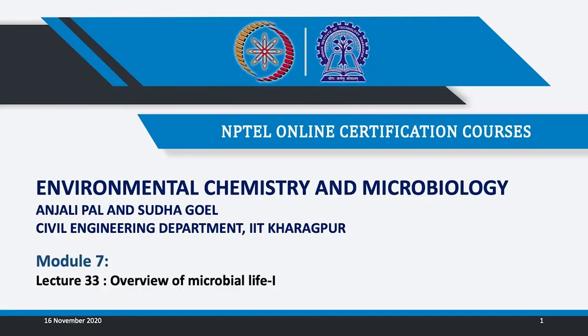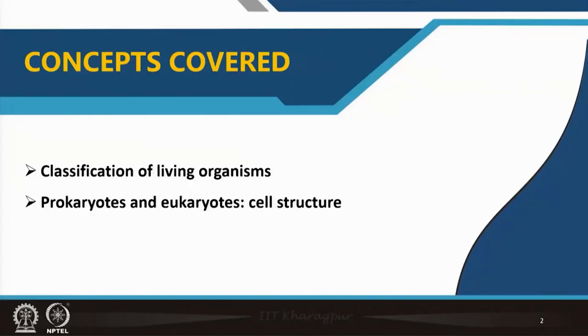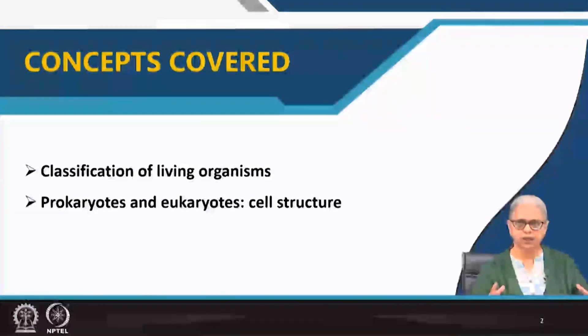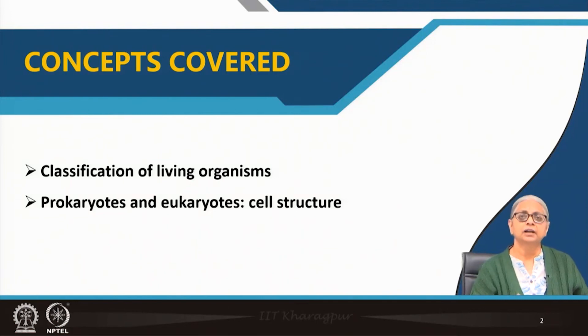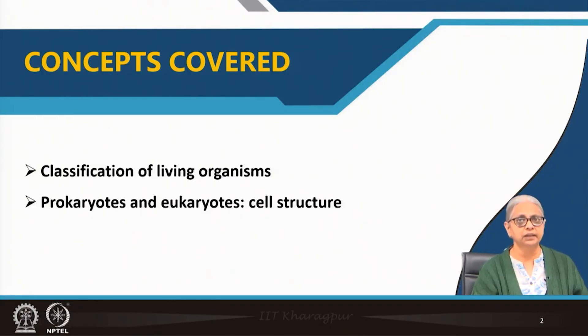Welcome everyone to lecture number 3. We are going to start a new topic today: an overview of microbial life. This topic has been divided into 3 parts and we are going to look at different microbial groups. We are going to look at the classification of living organisms and the differences between prokaryotes and eukaryotes, which are the 2 main categories of living organisms, their cell structure, and different microbial groups in subsequent parts.